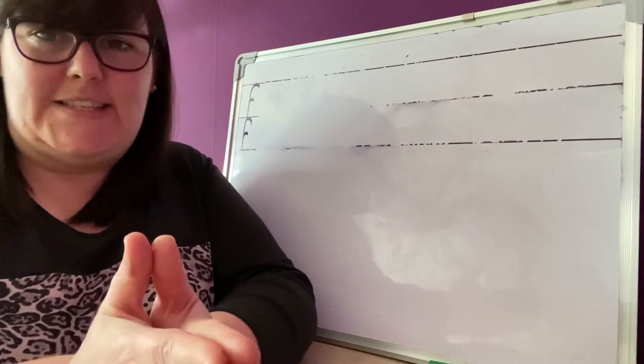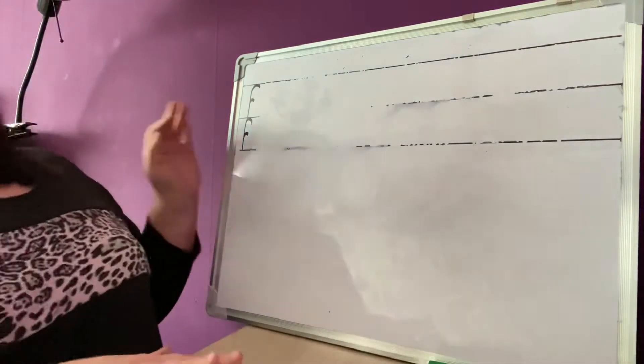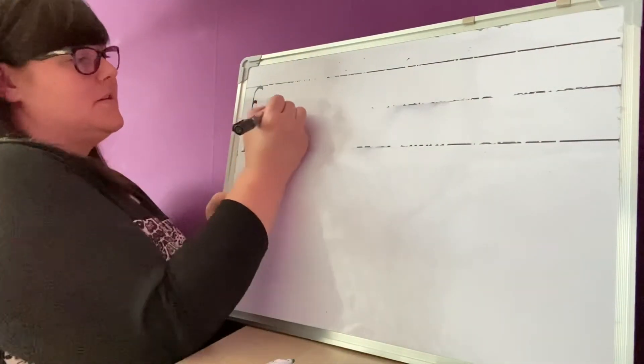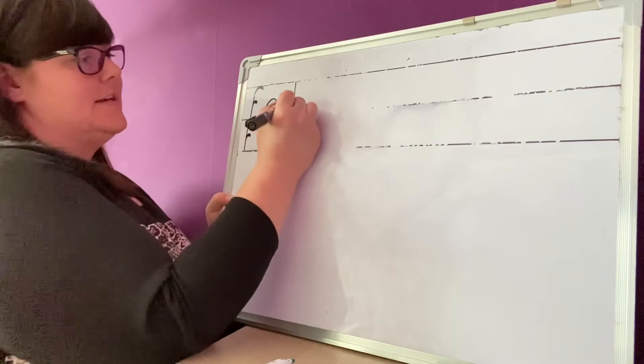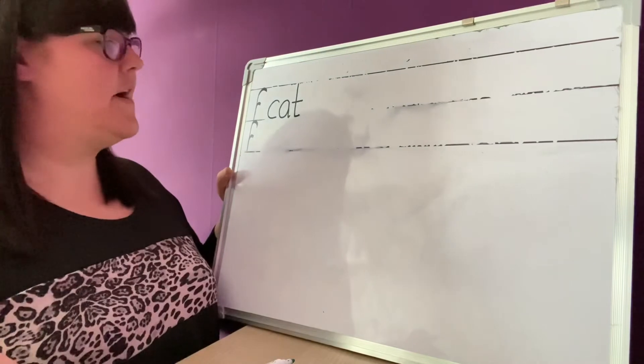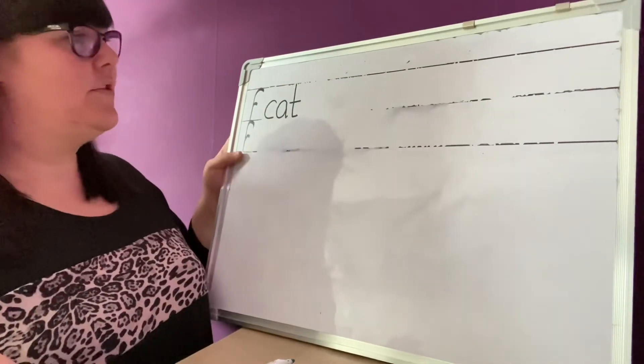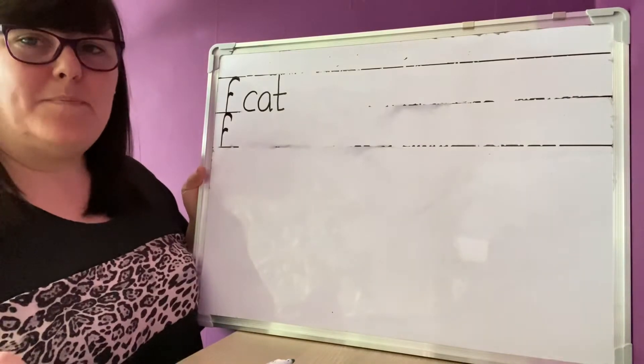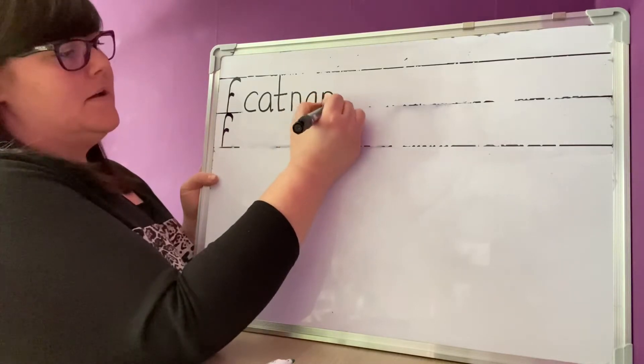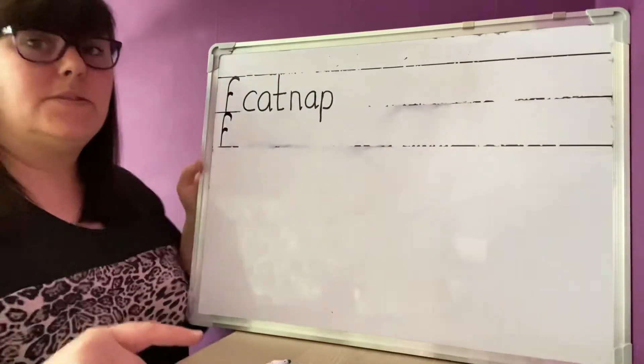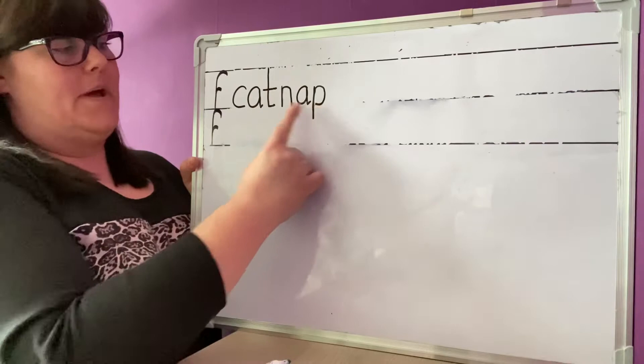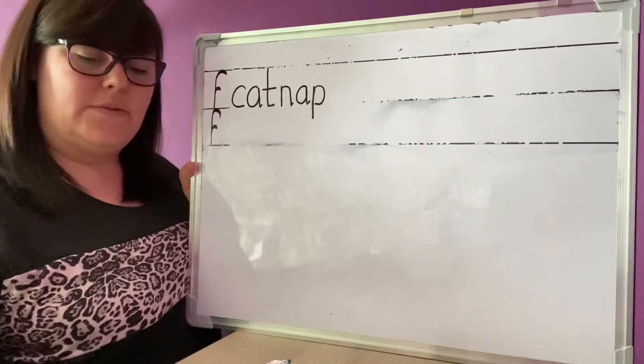I'm not even sure you need to segment that one. Cat. Write it on your board for me. Cat. Cat, cat, cat. Nap. I don't think you need to segment that one either. Nap. Write it on your board for me. Nap. N-a-p. Nap. Let's check. Say the sounds and read the word. C-a-t-n-a-p. Cat-nap. Well done. Okay.